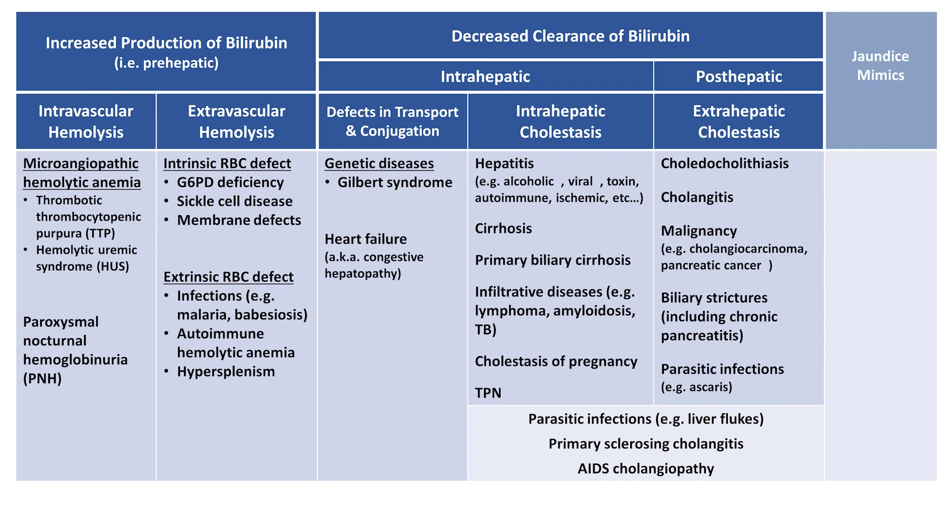And finally, our jaundice mimics. This includes anything which turns the skin yellow without an abnormal bilirubin level. The most notable condition here is carotenemia, caused by the prolonged excessive consumption of carotene-rich foods such as carrots and sweet potatoes, most often seen in young children.